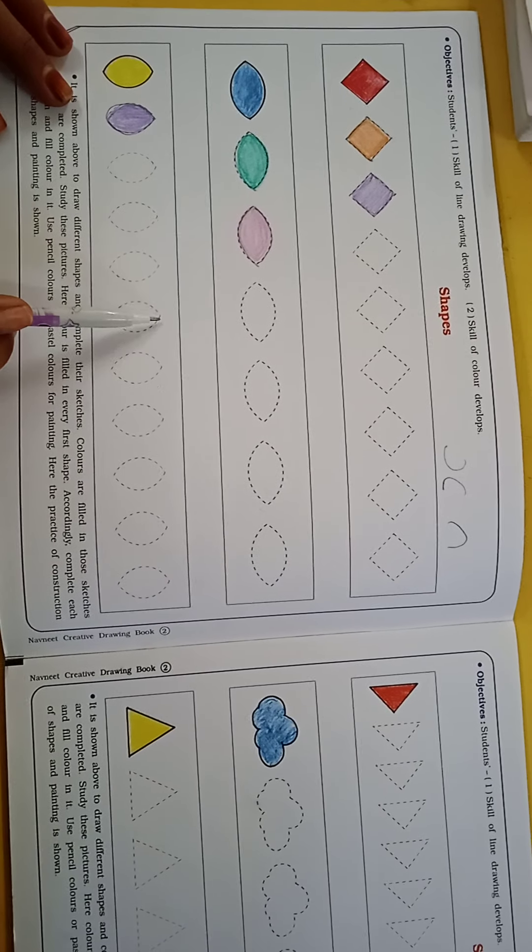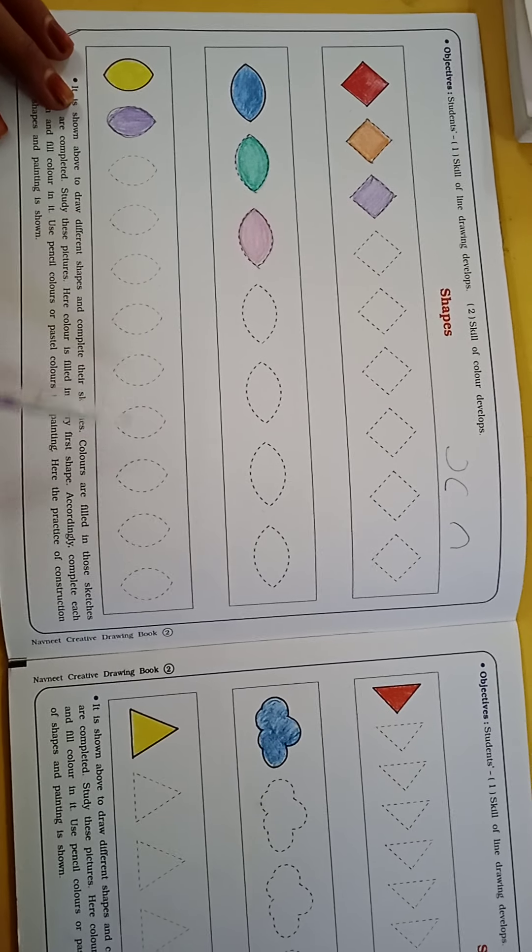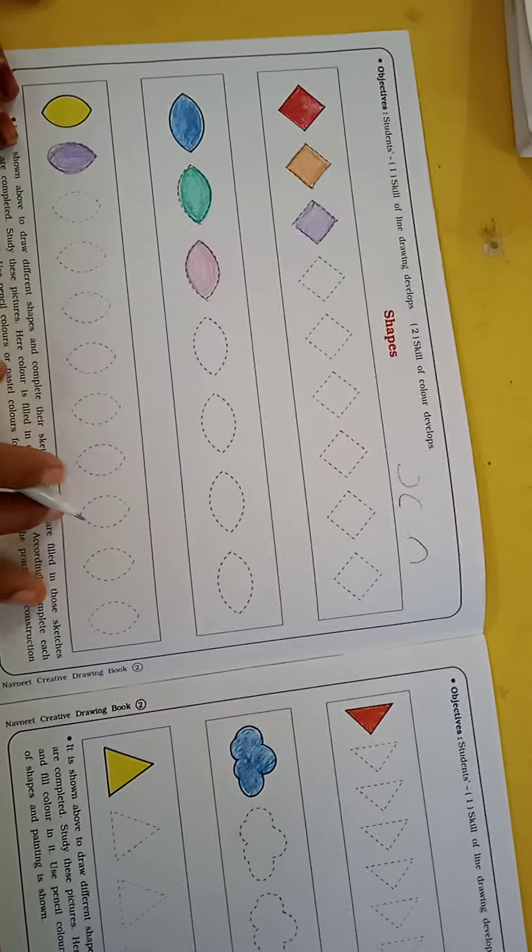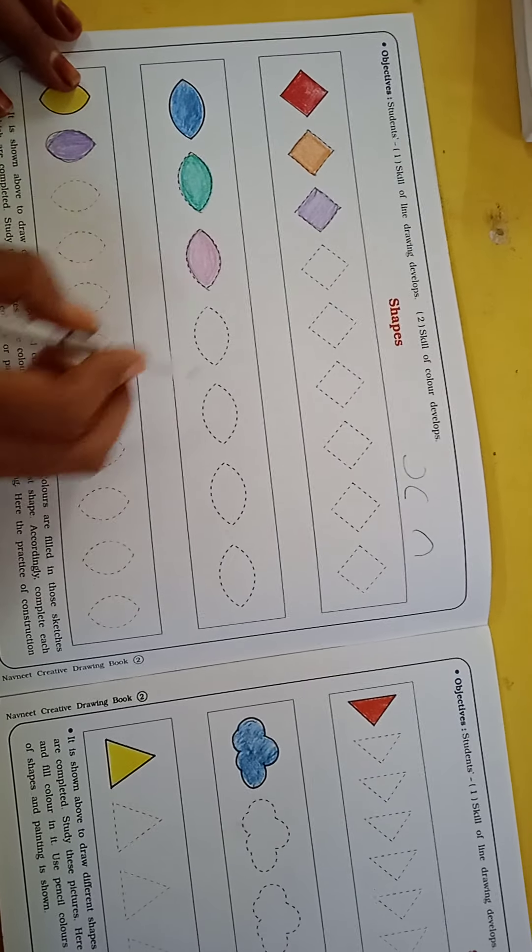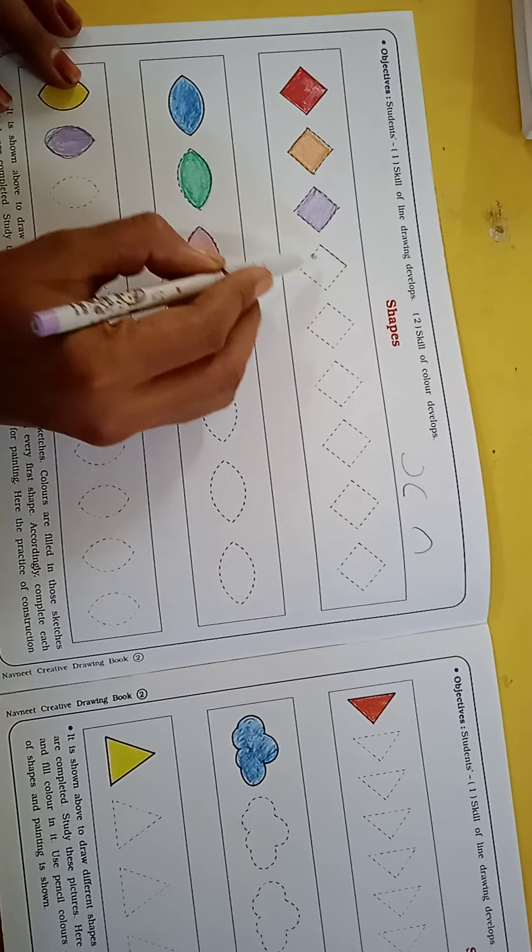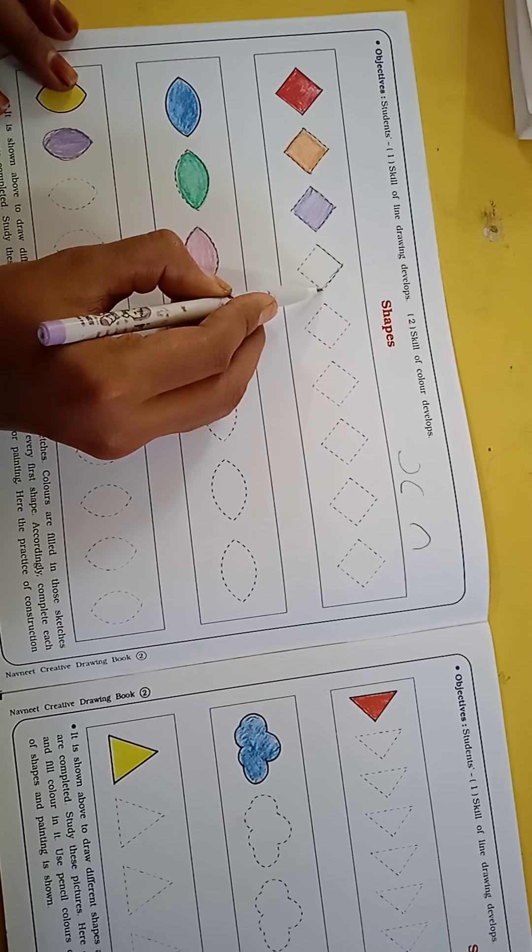And this is the opposite curve, opposite-c and c. You have to get the practice here. So what do you have to do? The dotted line, you will match the dotted line. This way you have to match the dotted line. You have to use the hand.